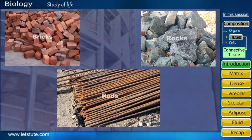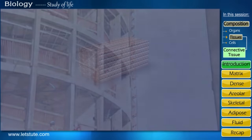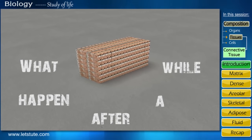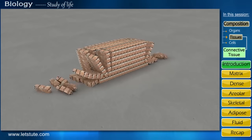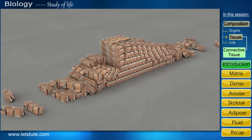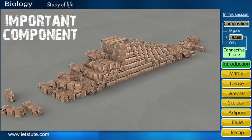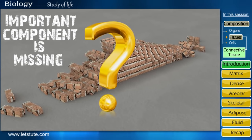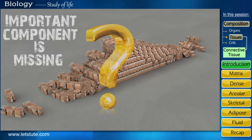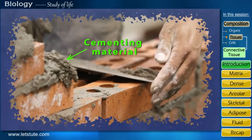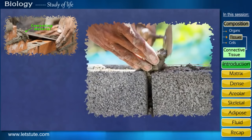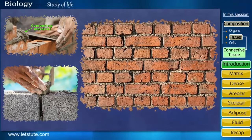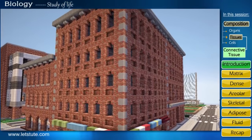So let's try to make our own building. We started to pile up a few bricks, but after a while they all collapsed. Why do you think it happened? Maybe there's some important component which we seemed to miss. We didn't really use any cementing material, which is very important to build a structure.